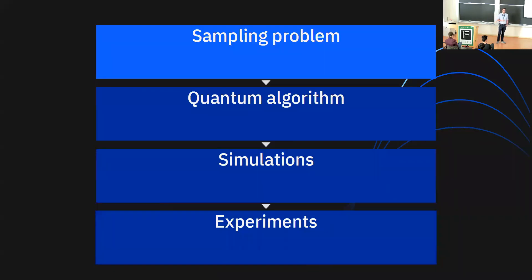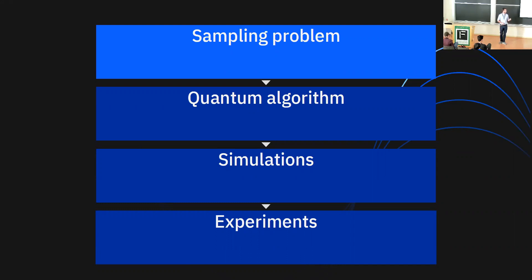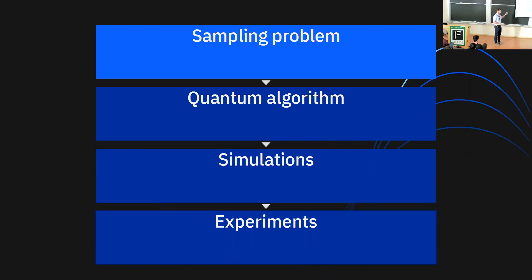Here's the plan for today. The talk is a mix of theory and experiment. I'm going to start out by introducing the sampling problem in question and the classical algorithms that are currently used to solve it. This will lead naturally into our quantum algorithm, and then we'll take that for a spin — no pun intended — in both simulations and experiments.